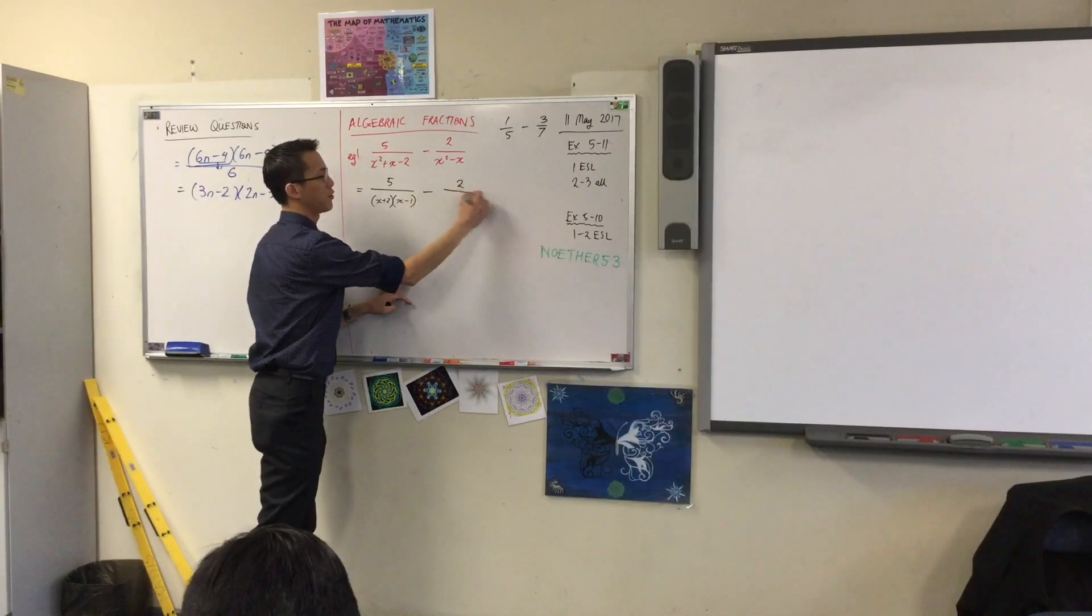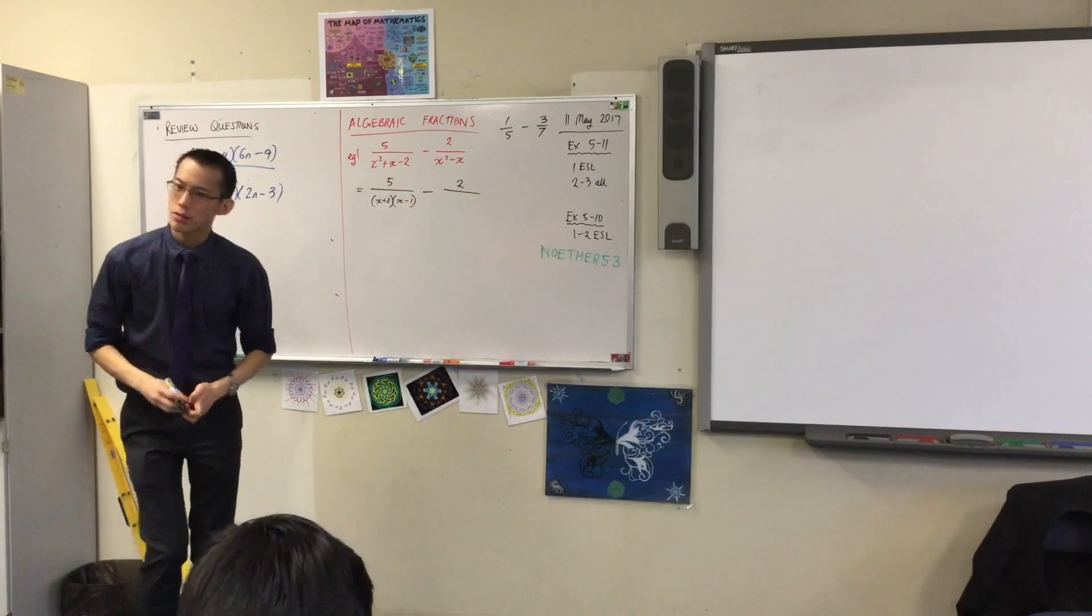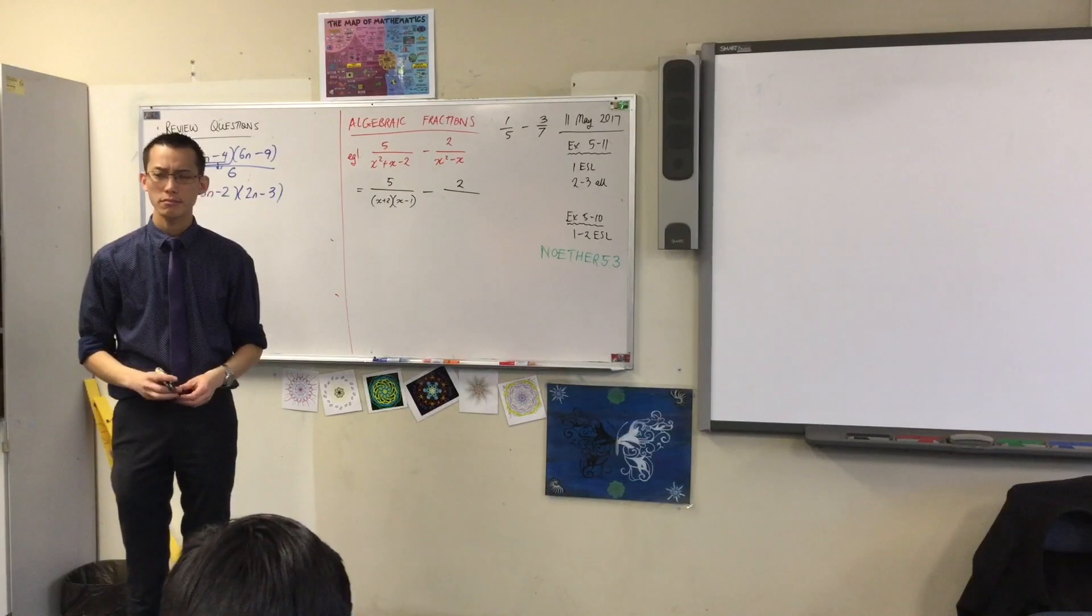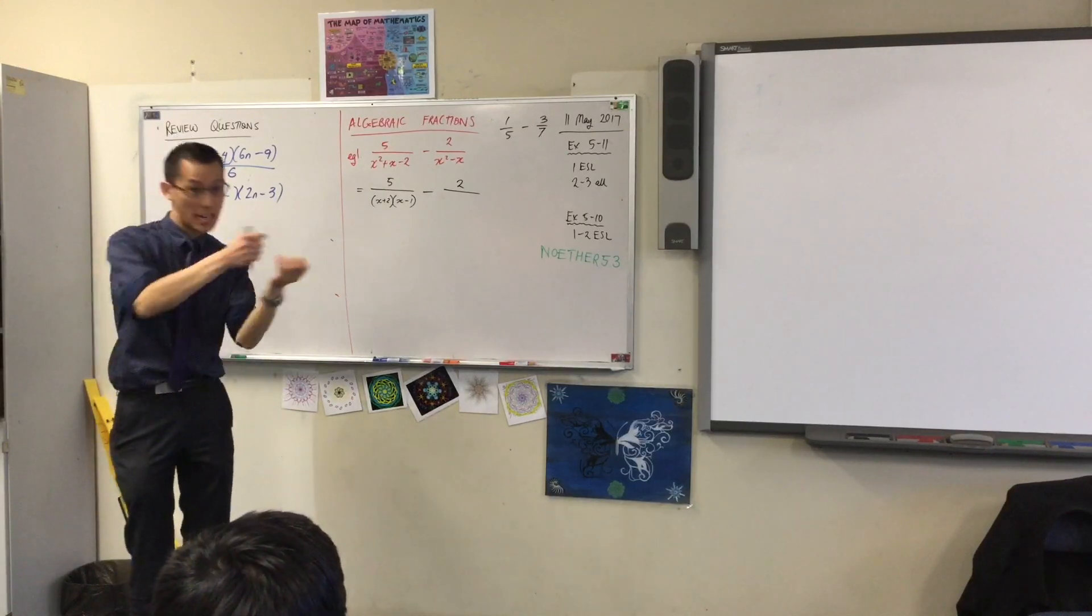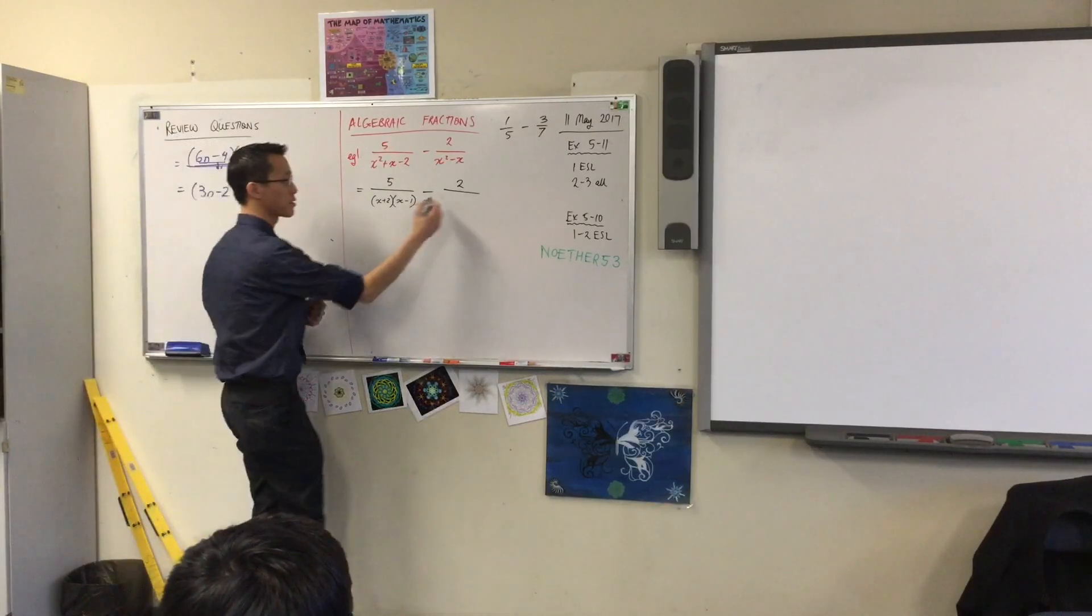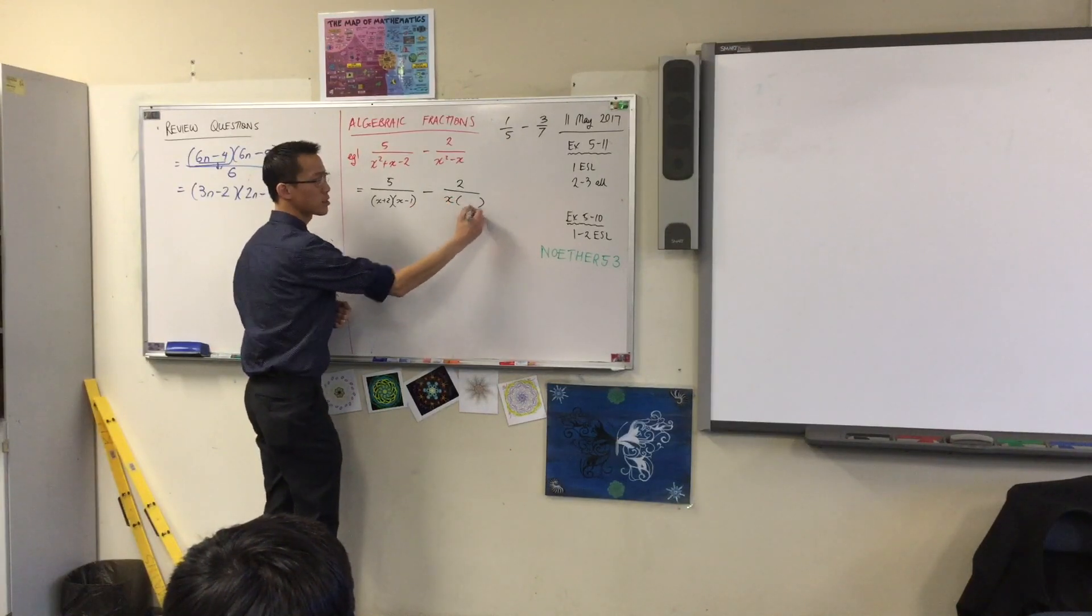Take away 2 divided by, what do we factorize here? I can just take out a common factor of x. What does it leave me with?